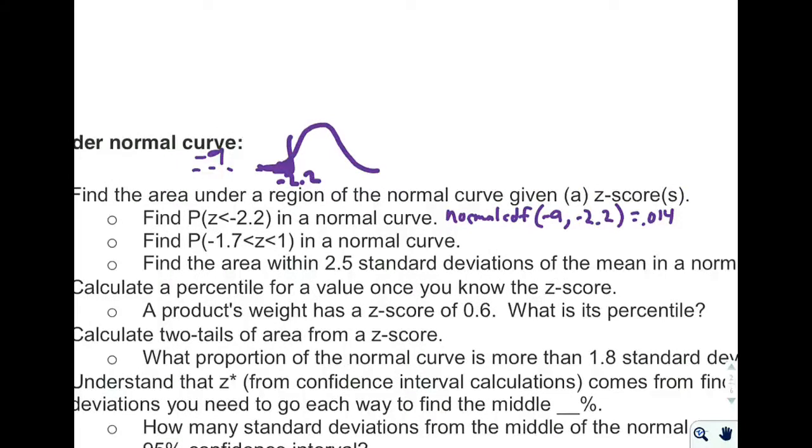This next one here, same idea, I'm going to do normalCDF again, but I'm trapped between two known areas. So if I sketch myself a picture, negative 1.7 and positive 1, I'm going to be finding the area in between those two. So I'm thinking probably 75%. It's a pretty sizable chunk of the normal curve.